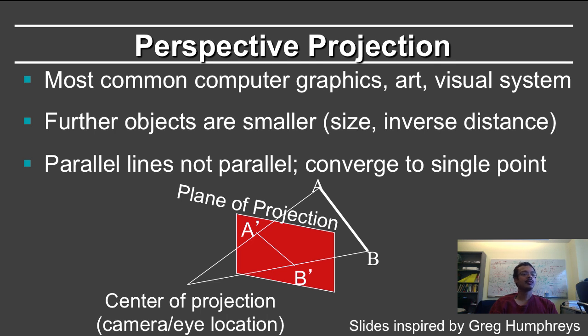Furthermore, if you look at something like railway tracks, you'll see that the lines, even though they're parallel, seem to converge in the distance, although they never actually meet. This is perspective projection, where you have a center of projection, which is the camera or the eye location, and the geometry is as shown here.